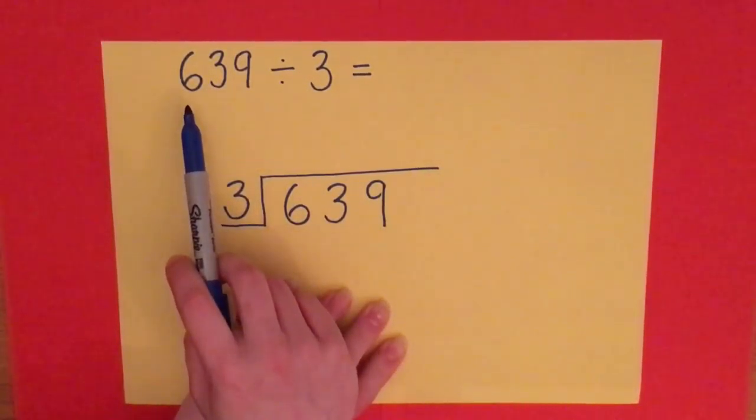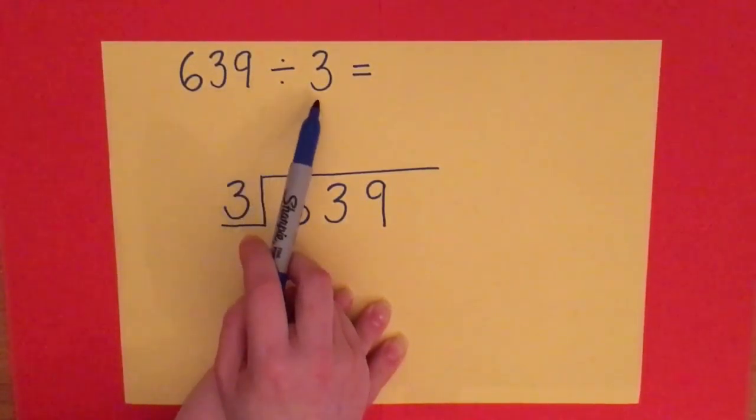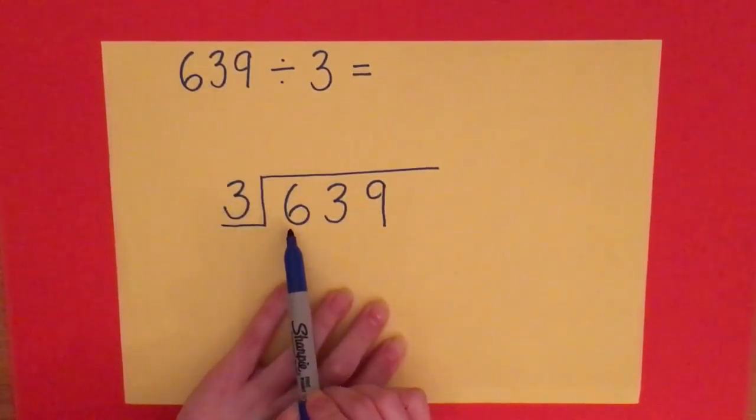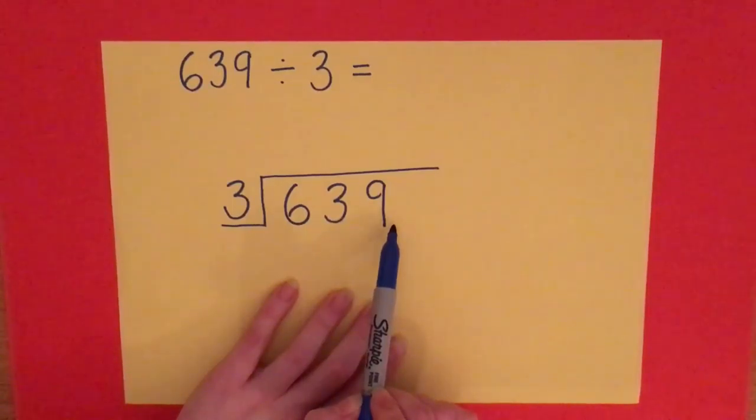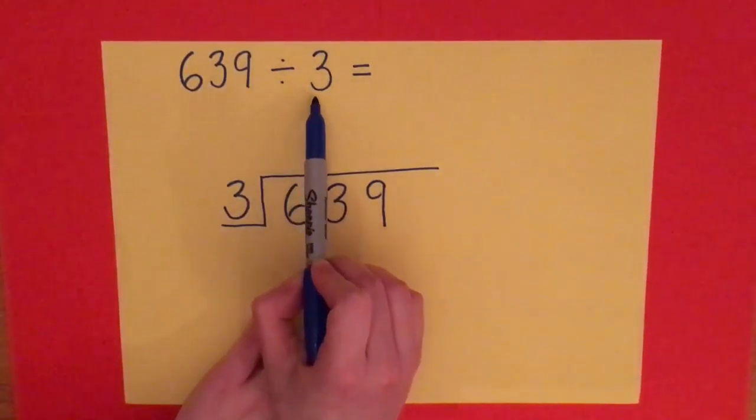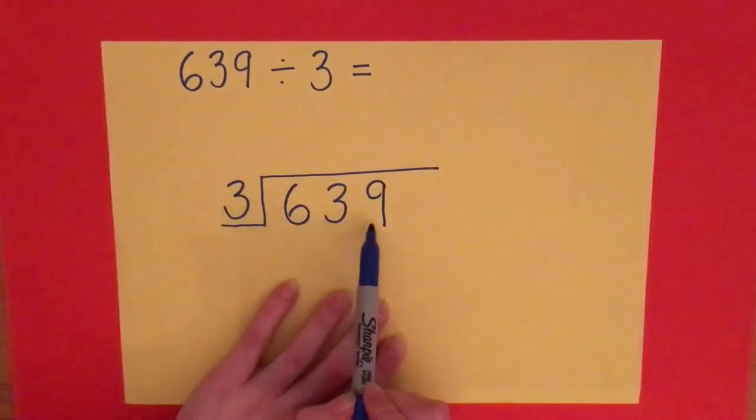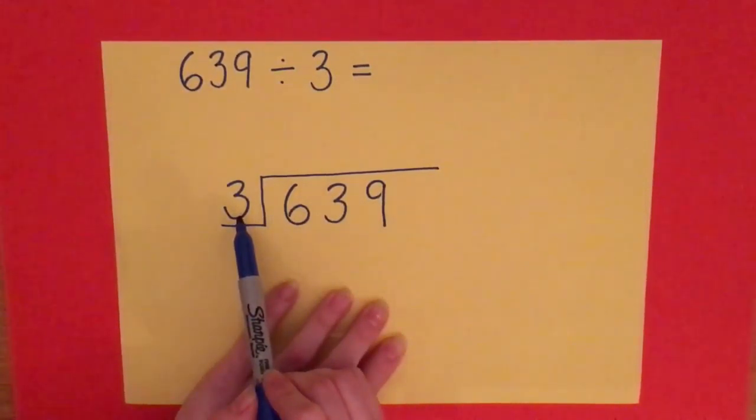So my question today is 639 divided by 3. The number that I'm dividing goes underneath the bus stop, and then the number I'm dividing by is going to be outside the bus stop. Okay, so 639 divided by 3.